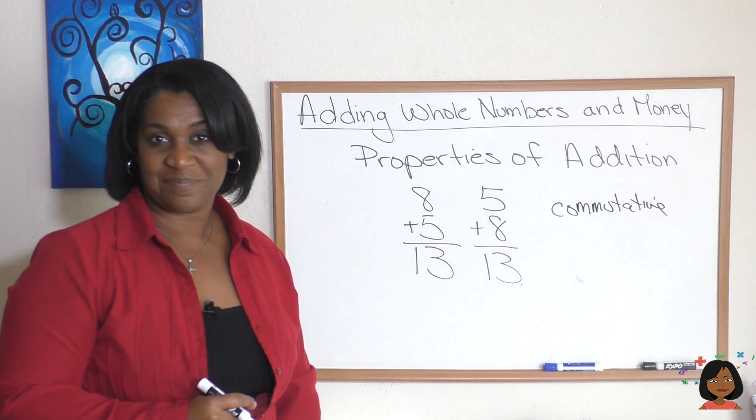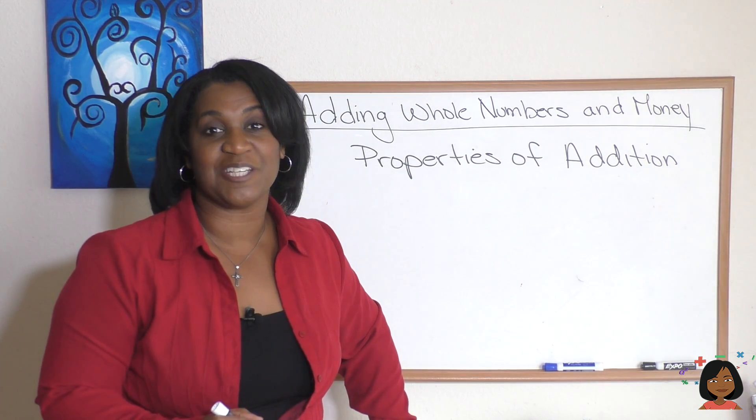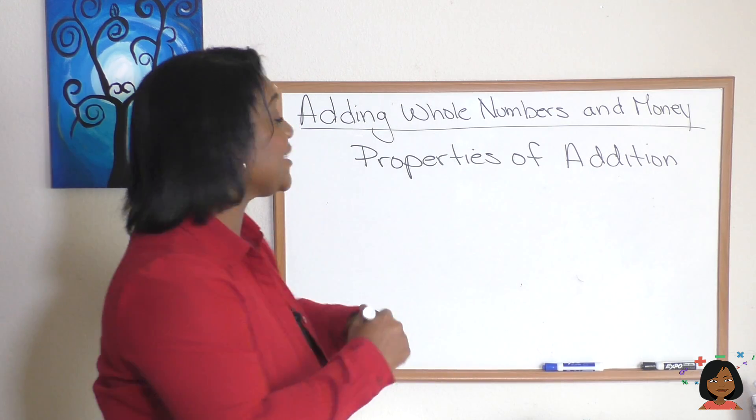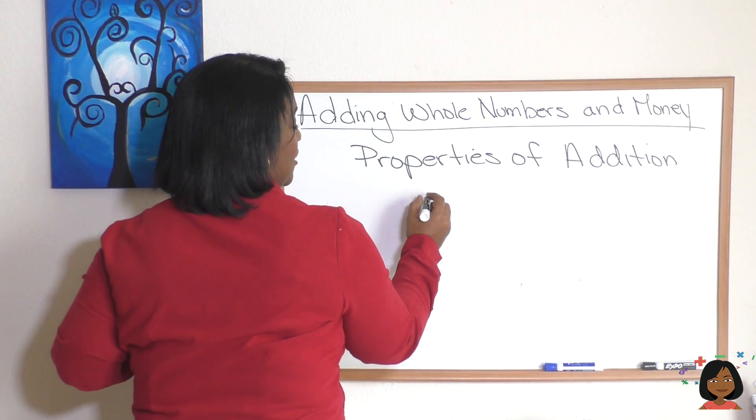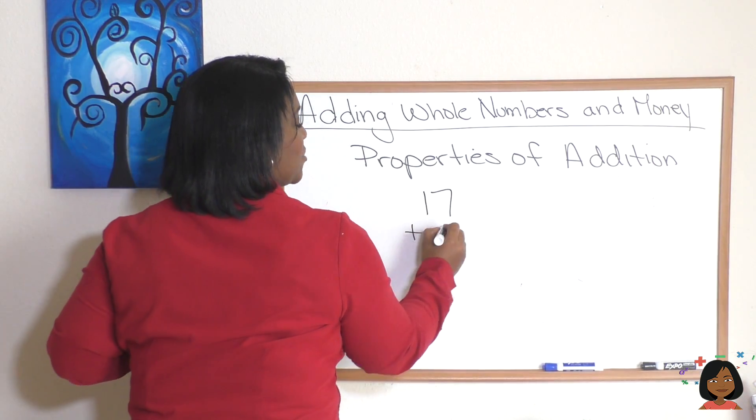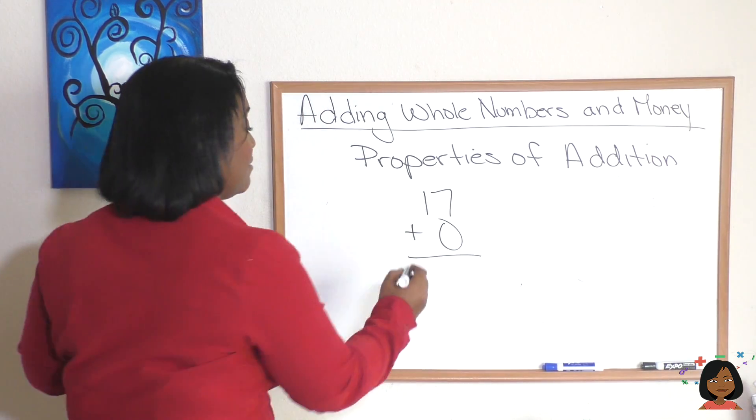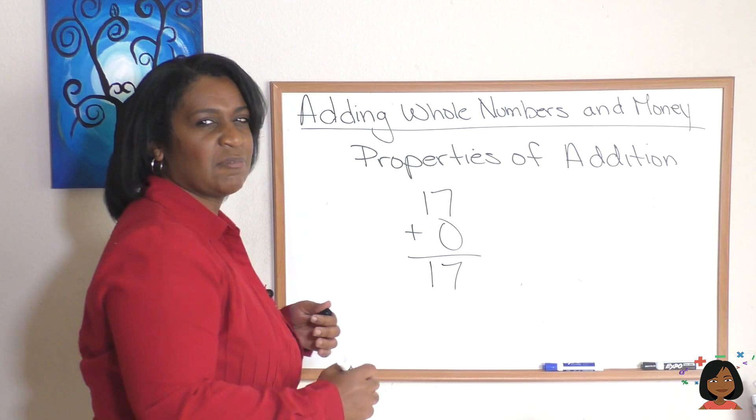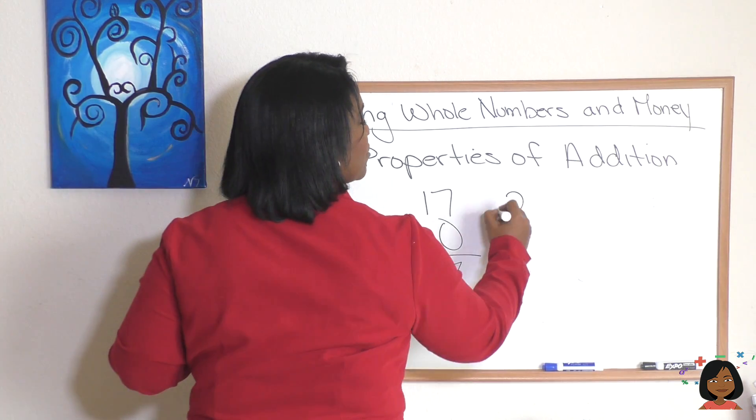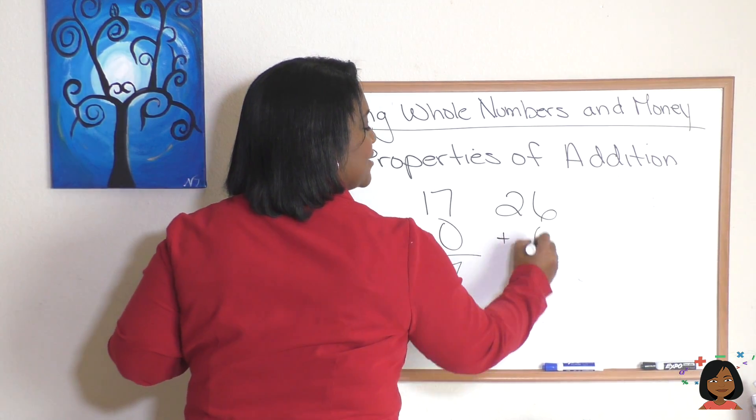I want to introduce you to one more property of addition. Take a look. Let's say I had a number like seventeen and I decided to add zero to it. The answer is still going to be seventeen. Let's see if that works for a few other numbers. If I had a number 26 and I added zero to it my number is still 26.